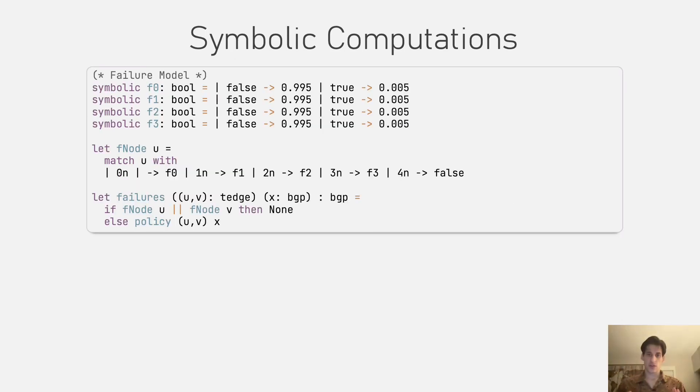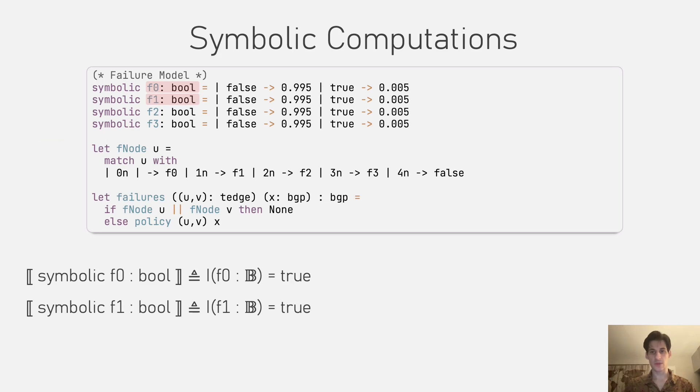Okay, so first let's focus on symbolic computations. When we declare a symbolic, we get the set that includes all possible values for that type. To efficiently represent these potentially very large sets, we will use binary decision diagrams.